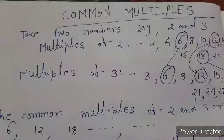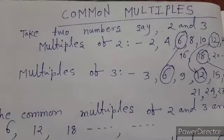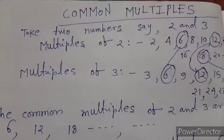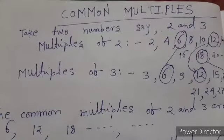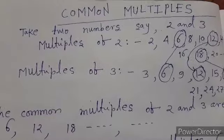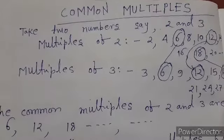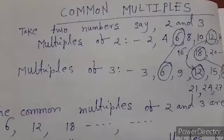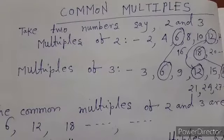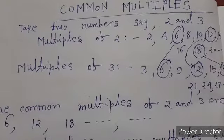First, we will study about the multiple method of LCM. To find the LCM by the multiple method, first we have to know about common multiples. We take two numbers, say two and three. Multiples of two are: two, four, six, eight, ten, twelve, fourteen, sixteen, eighteen, twenty, and so on.